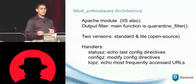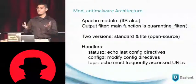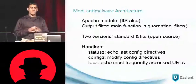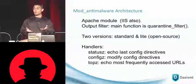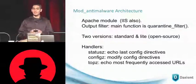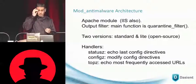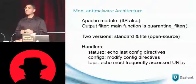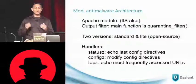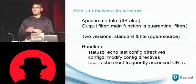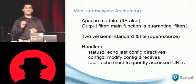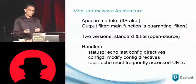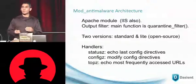Mod anti-malware is available both as an Apache or as an IIS module. It's structured as an output filter in both cases. The main function is called quarantine_filter, and I'll provide a schematic on how it works. There are two versions of mod anti-malware: a standard version and a light version. We have made the light version open source — you can go to SourceForge, type in DayCent, and download the mod anti-malware light module.